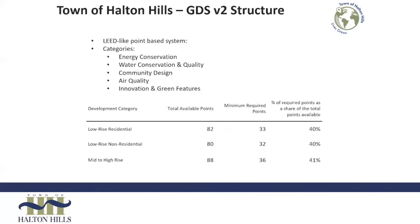Our green development standard is embedded within a broader context of town policies — primarily the town's official plan, which clearly articulates the town's expectations with regard to sustainable development and helps integrate green development standards into the planning process. Our standard is based on a LEED-like points-based system, including a set of metrics or criteria that you can achieve points in a set of categories: energy conservation, water conservation and quality, community design, air quality, innovation and green features. There are three individual checklists currently depending on the type of development: low-rise residential, low-rise non-residential, and mid to high-rise residential.